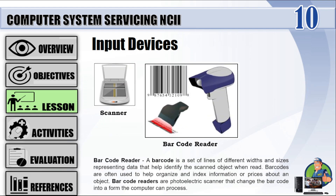Barcode reader: A barcode is a set of lines of different widths and sizes representing data that help identify the scanned object when read. Barcodes are often used to help organize and index information or prices about an object. Barcode readers are photoelectric scanners that change the barcode into a form the computer can process.